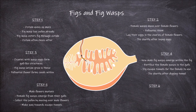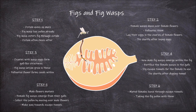The sixth and final step involves the mated females leaving through the escape tunnels, taking the fig pollen with them. They then fly to another fig tree and the cycle continues. And that concludes this video on the relationship between figs and fig wasps.